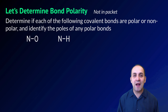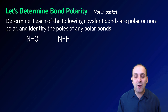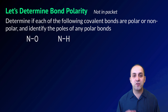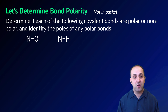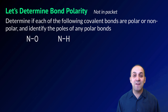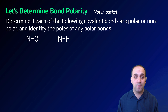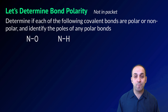Let's take a moment and try some examples of figuring out if a bond is polar or not. What I'd like you to do is determine if each of the following covalent bonds are polar or non-polar, and if it is polar, identify the poles in the bond. Pause the video, try it on your own, and then when you're ready, let's go through it together.